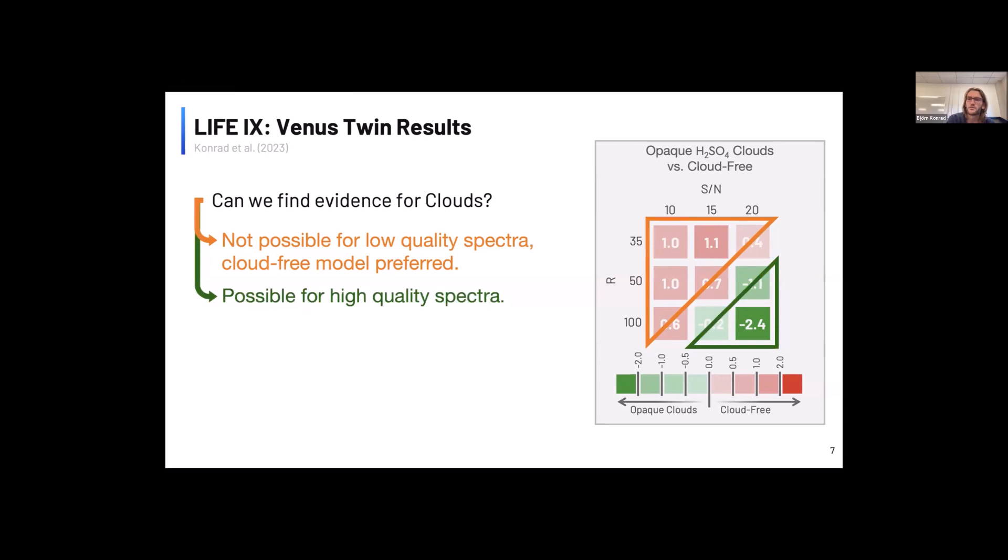And only if we go to very high, the highest resolution and signal-to-noise cases, so basically resolution 50 or 100 and signal-to-noise of 20, only in these cases can we really infer, or only in these cases the cloudy model is preferred, and thus we can infer the presence of clouds directly in Venus's atmosphere. And these are also the cases where the cloudy model yields significantly better radius estimates than the cloud-free model.